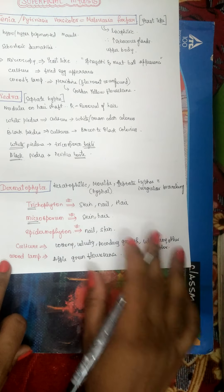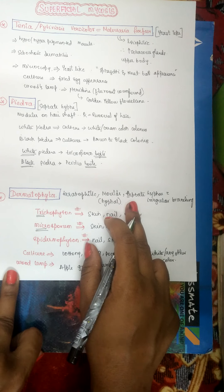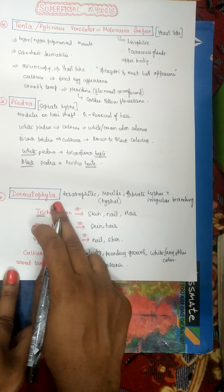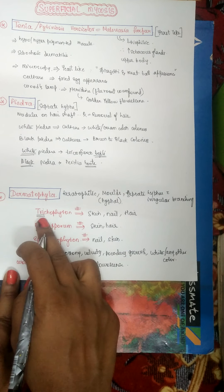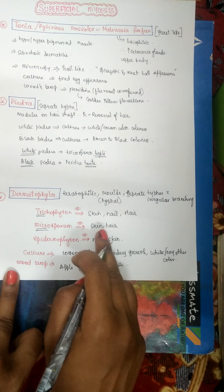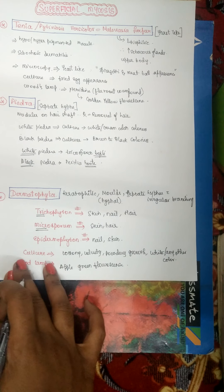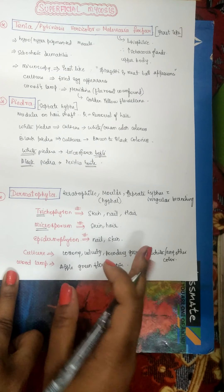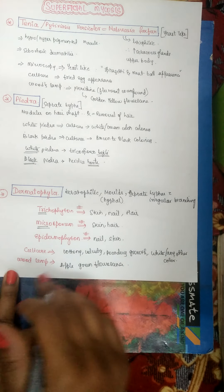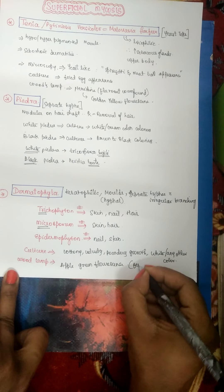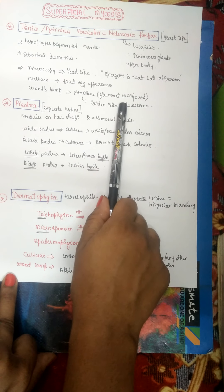On Wood's lamp, only a few dermatophytes show apple green fluorescence. To summarize: dermatophytes are keratophilic molds with septate hyphae and irregular branching. Culture shows cottony/velvety/powdery growth with variable colors. Wood's lamp shows apple green fluorescence for some, compared to golden yellow fluorescence for Malassezia furfur.